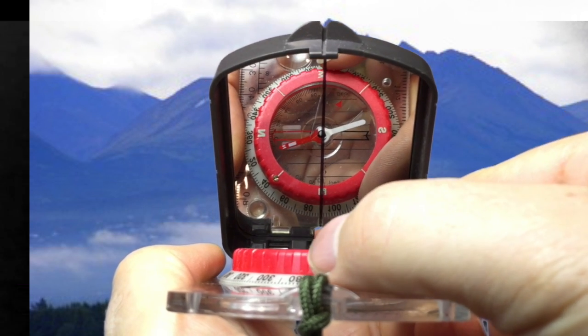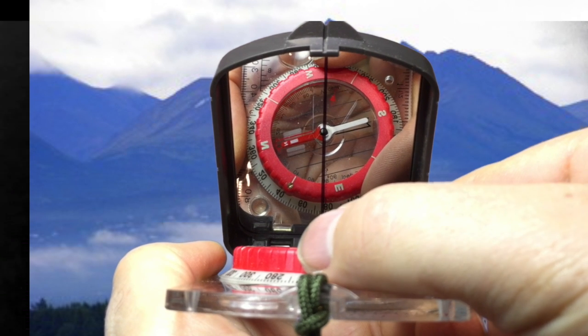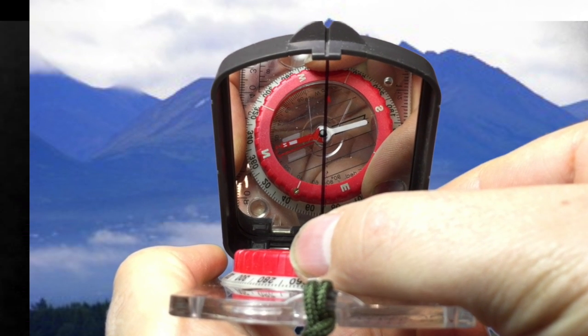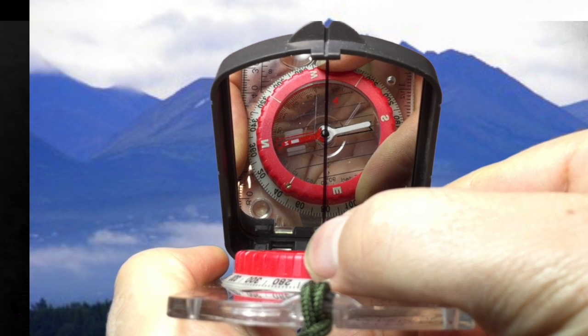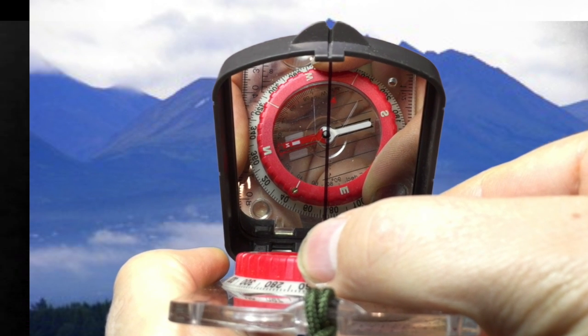Once you're close, recheck that your compass is still aligned with the distant object. It's usually necessary to make several fine adjustments of the compass position and dial rotation before you'll be satisfied that you have everything adjusted correctly.